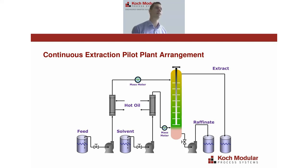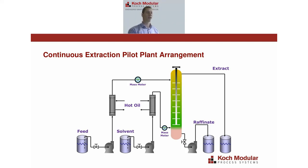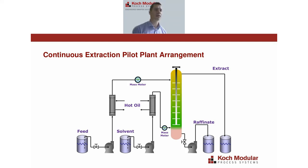A typical pilot plant setup includes mass meters on feed and solvent lines, heat exchangers and jacketed glass or heat tape on the extraction column for temperature control, pumps on feed and solvent lines, and a heavy phase pump (raffinate) to control the interface. About 95% of the time, we use glass shell extraction columns — the key benefit is you can see everything taking place: flood points, coalescence on internals, emulsion bands, entrainment, and rag layers are all immediately visible.